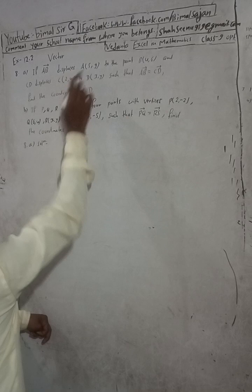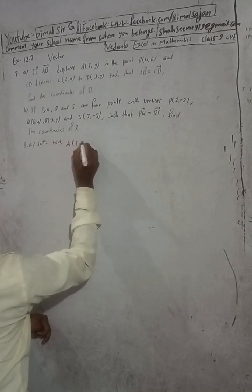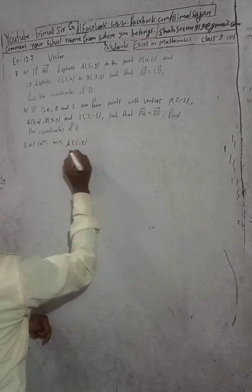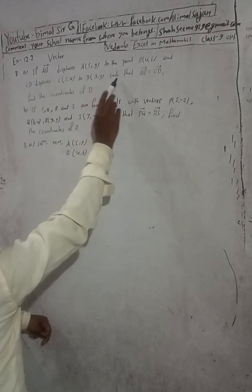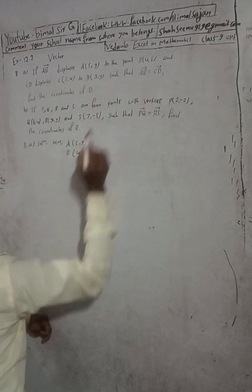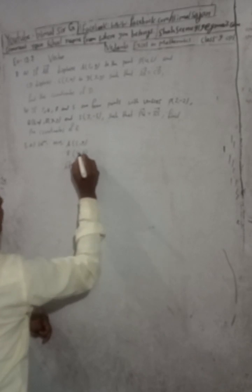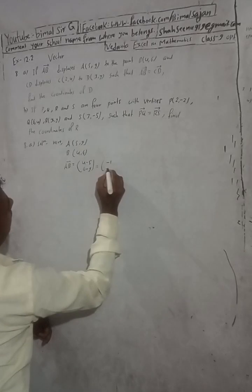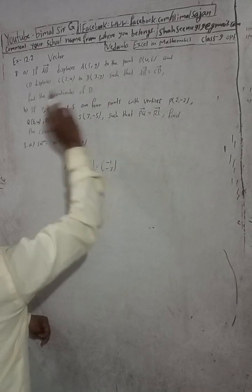AB displaces A(5,9) to B(4,6). Such that AB vector is equal to CD vector. Write here AB vector first: AB vector means (4 minus 5) and (6 minus 9), so this is equal to (-1, -3).